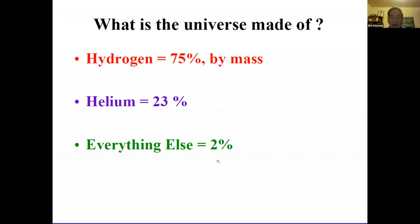By studying light from stars and all materials we can get our hands on here on Earth, we find that of all the mass in the observable universe, approximately 75% is the lightest chemical element, hydrogen. The next lightest element, helium, comprises about 23% of all matter. Everything else represents about 2%. That 2% includes us and the Earth and everything we can really care about, so it's very important, albeit a minor fraction.